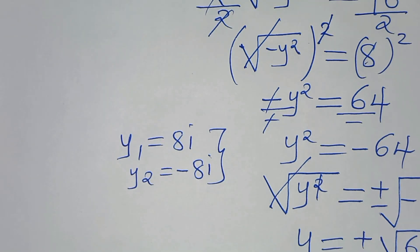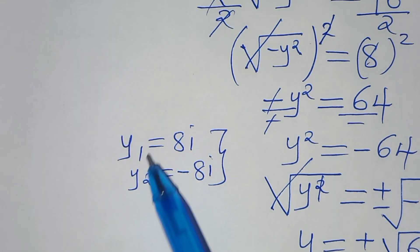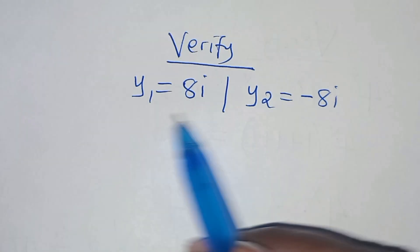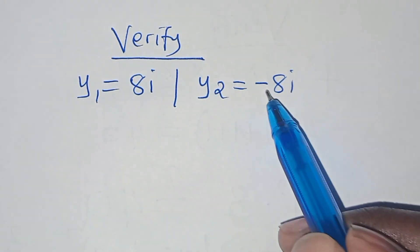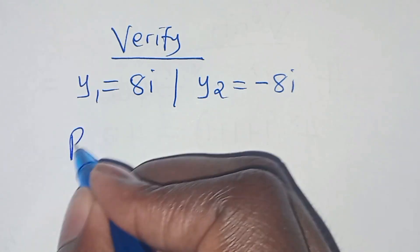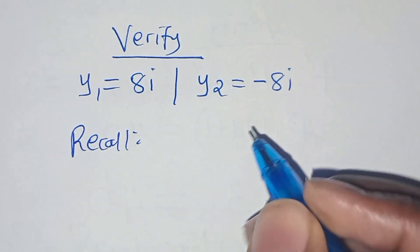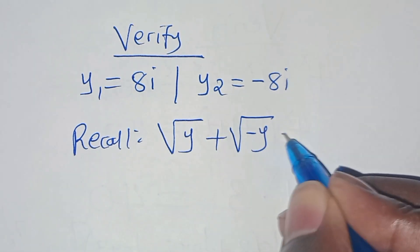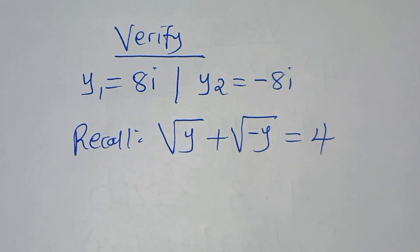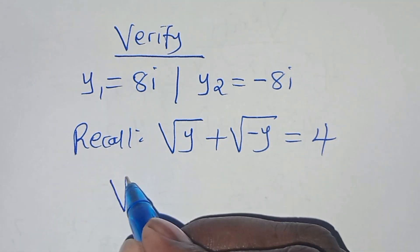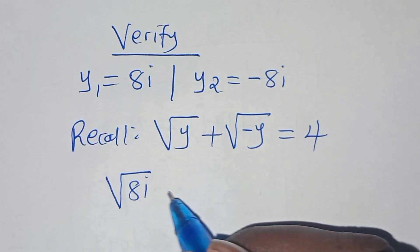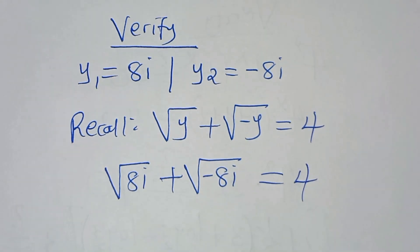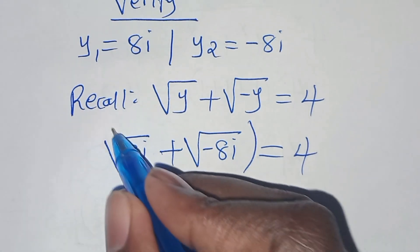The next step is to verify that y₁ = 8i and y₂ = minus 8i satisfy the equation. Substituting y₁, we have the square root of 8i plus the square root of minus 8i equals 4. We again square both sides.